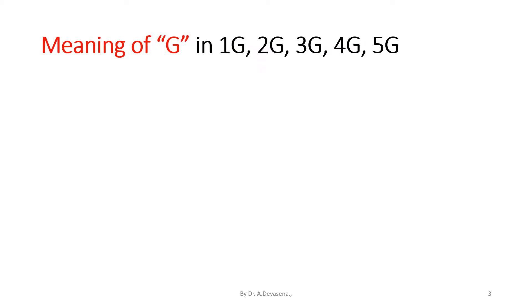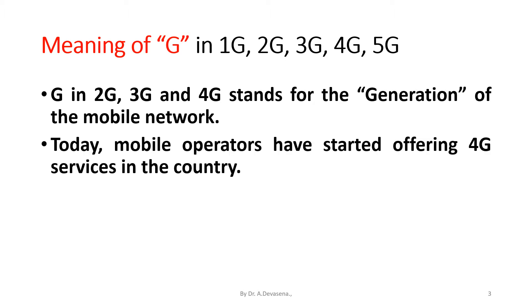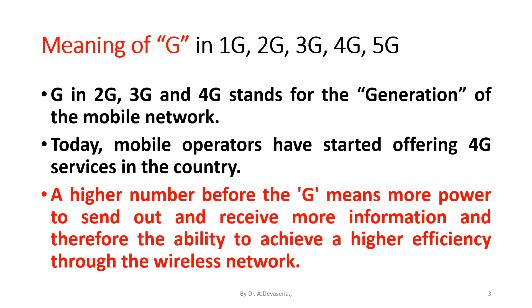The meaning of G in 1G, 2G, 3G, 4G, and 5G: G stands for the generation of the mobile network. Today, mobile operators have started offering 4G services in the country. A higher number before the G means more power to send out and receive more information, and therefore the ability to achieve higher efficiency through the wireless network.